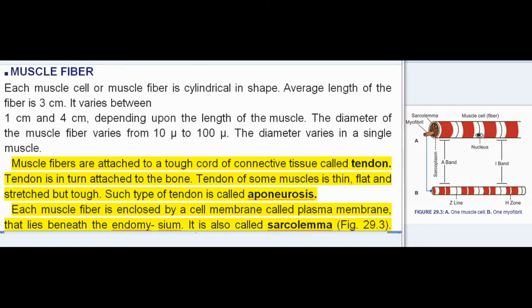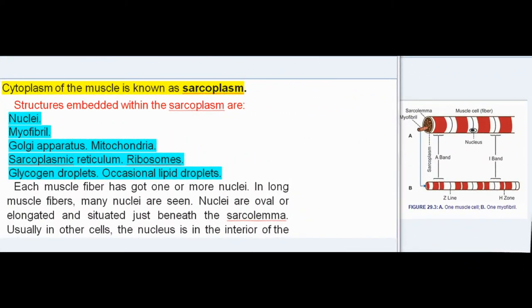Muscle fibers are attached to a tough cord of connective tissue called tendon. Tendon is in turn attached to the bone. Tendon of some muscles is thin, flat, and stretched but tough. Such type of tendon is called aponeurosis. Each muscle fiber is enclosed by a cell membrane called plasma membrane that lies beneath the endomysium. It is also called sarcolemma, Fig 29.3.